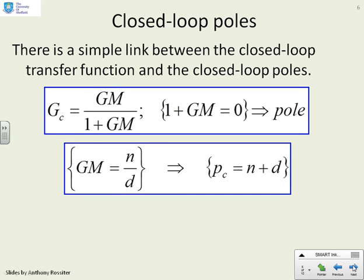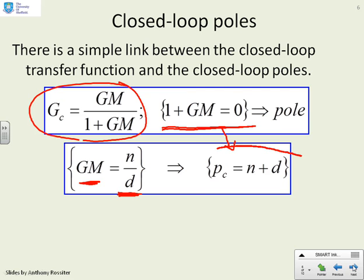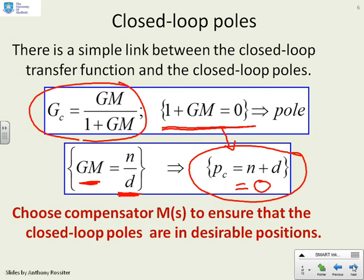Closed loop poles. We need to work out where the poles are, because a key design feature is to ensure the poles are in a desirable position. If the closed loop transfer function is GC equals GM over 1 plus GM, then the closed loop poles are given by the denominator set to zero: 1 plus GM equals 0. If GM can be written as N over D, then this is equivalent to writing PC equals N plus D equals 0. That's a simple observation students should be fluent with.